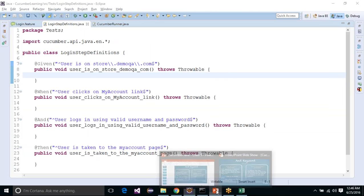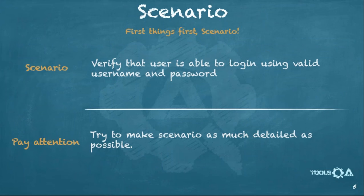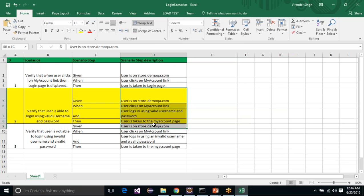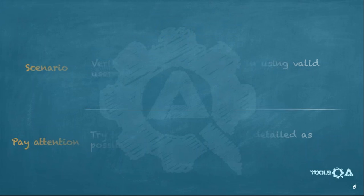This slide talks about the scenario we are implementing — verify that user is able to log in using a valid username and password. There is a note: try to make scenarios as detailed as possible. We have tried to do that by adding all details in the scenario itself — for example, specifying 'user is on store.demoqa.com' as a named URL in the precondition.